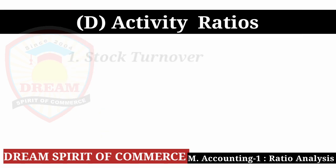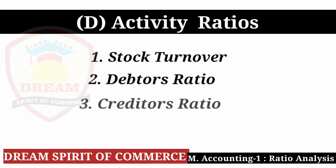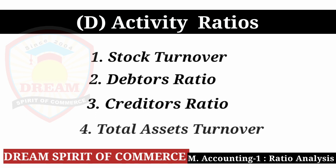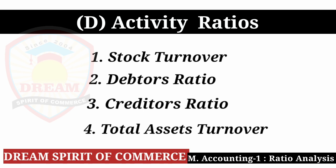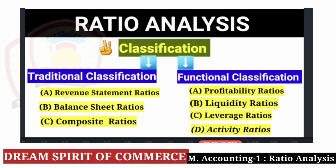Now we are going to Type D: Activity Ratio. In Activity Ratio: first is Stock Turnover, second Debtors Ratio, third Creditors Ratio, and four Total Assets Turnover. Functional classification has Type A Profitability Ratio, Type B Liquidity Ratio, Type C Leverage Ratio, and Type D Activity Ratio.